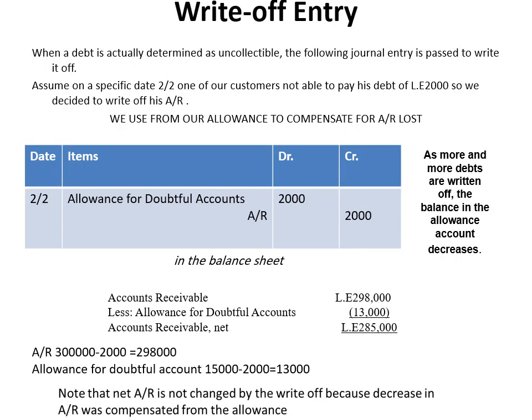Now we go to the write-off of accounts receivable. When a debt is actually determined as uncollectible, we write this accounts receivable off. For example, on a specific day one of our customers will not be able to pay his debt of $2,000, so we decide to write off his accounts receivable. Write-off of accounts receivable means reduction of accounts receivable — we subtract this value from accounts receivable, which is done on the credit side.